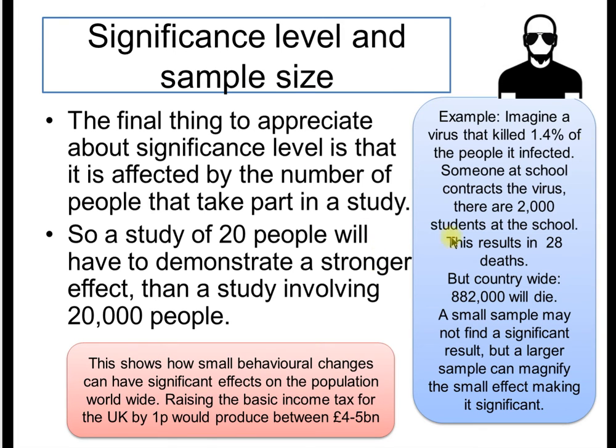Another example is, imagine a virus that kills 1.4% of the people infected. Someone at school contracts the virus, there are 2,000 people at school. This basically results in 28 deaths. It is devastating. 28 deaths is devastating. But out of 2,000, it's not the end of the world.